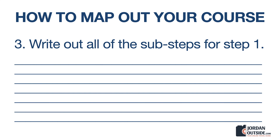After you've done that, step three is to write out all of the sub-steps for step one. Step one is typically a large step but has multiple sub-steps within it — this helps you get organized with your thought process of how you're going to teach this. Then in step four you write out all the sub-steps for step two, and in step five all the sub-steps for step three. So you'll have three major steps, each with sub-steps — the little things that need to happen to achieve the result you're teaching.